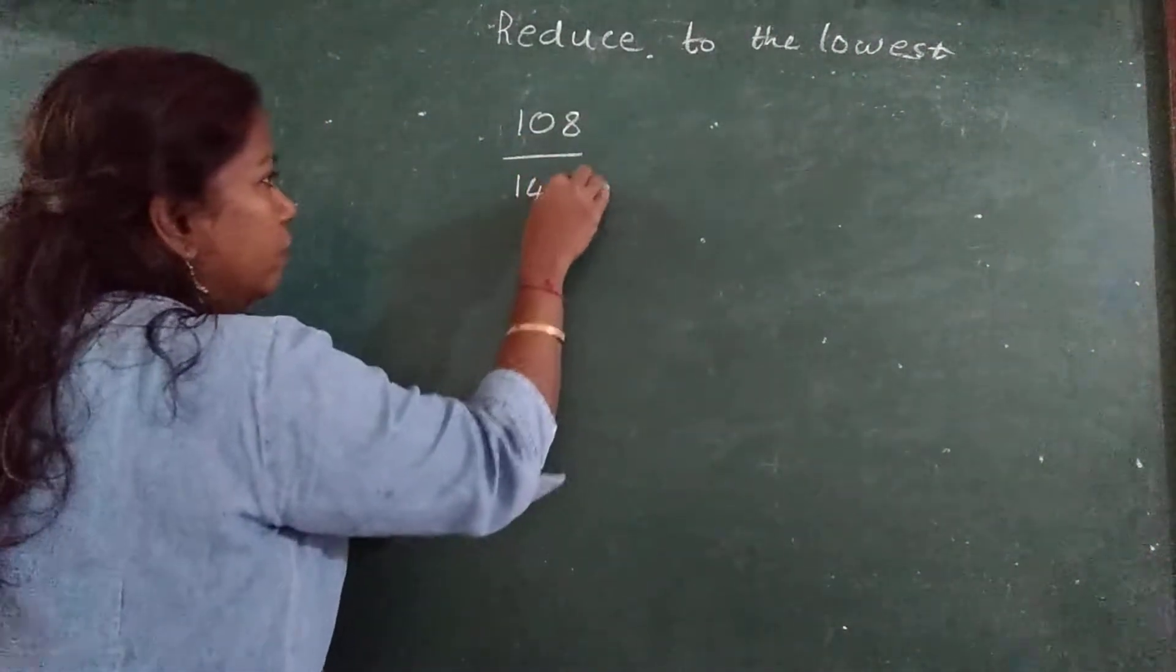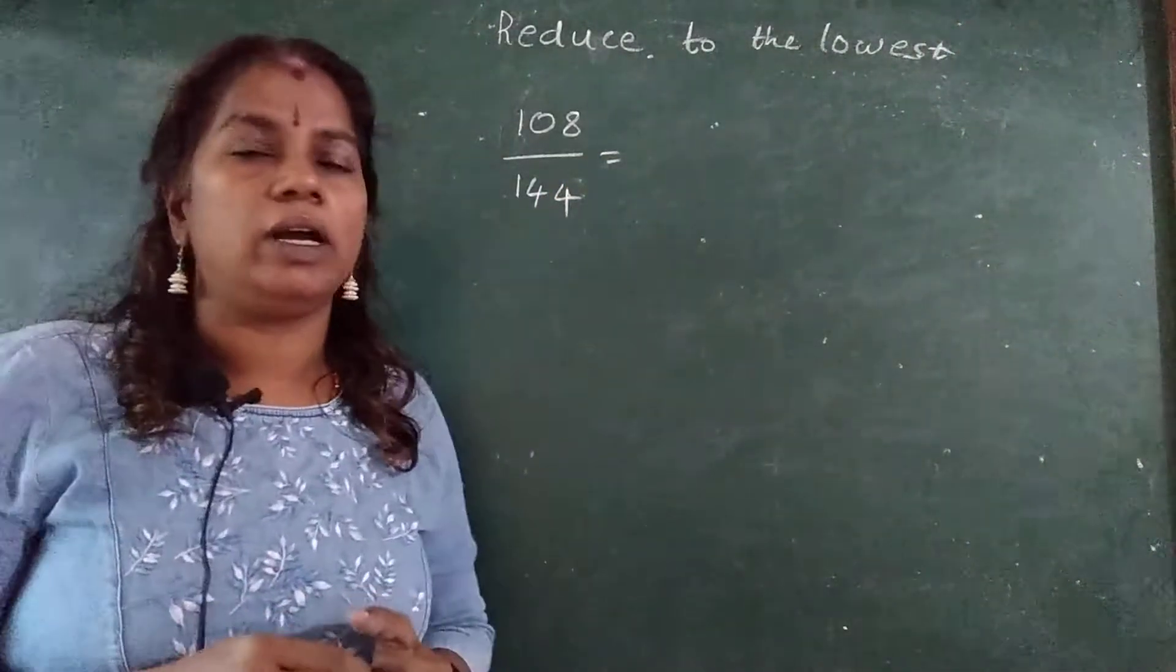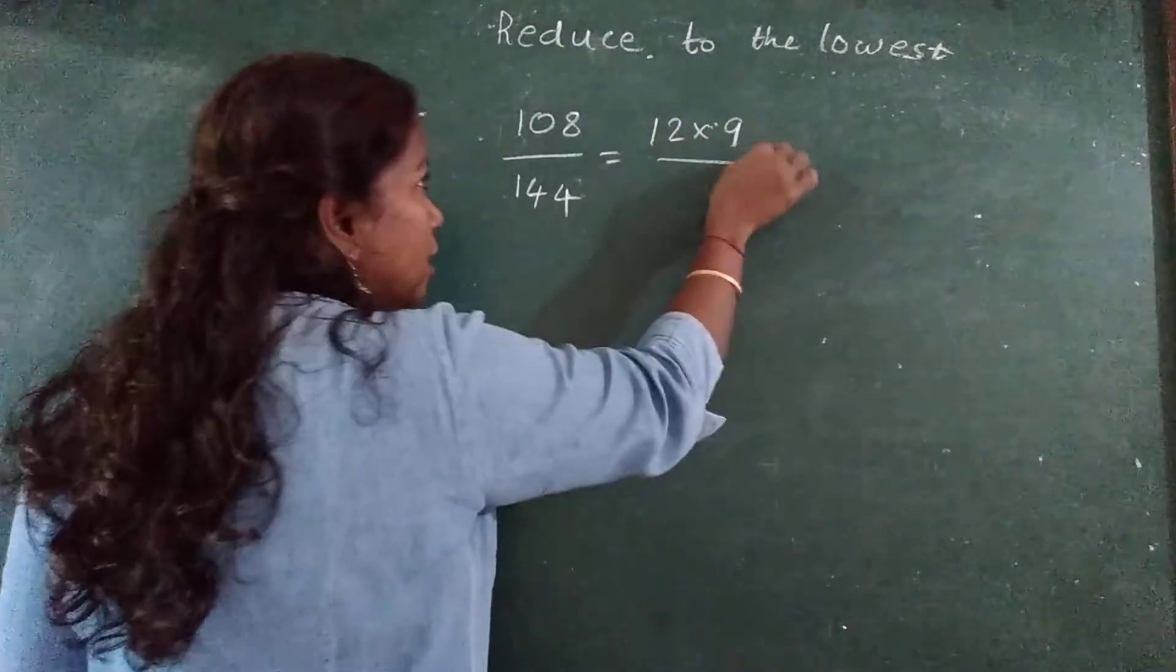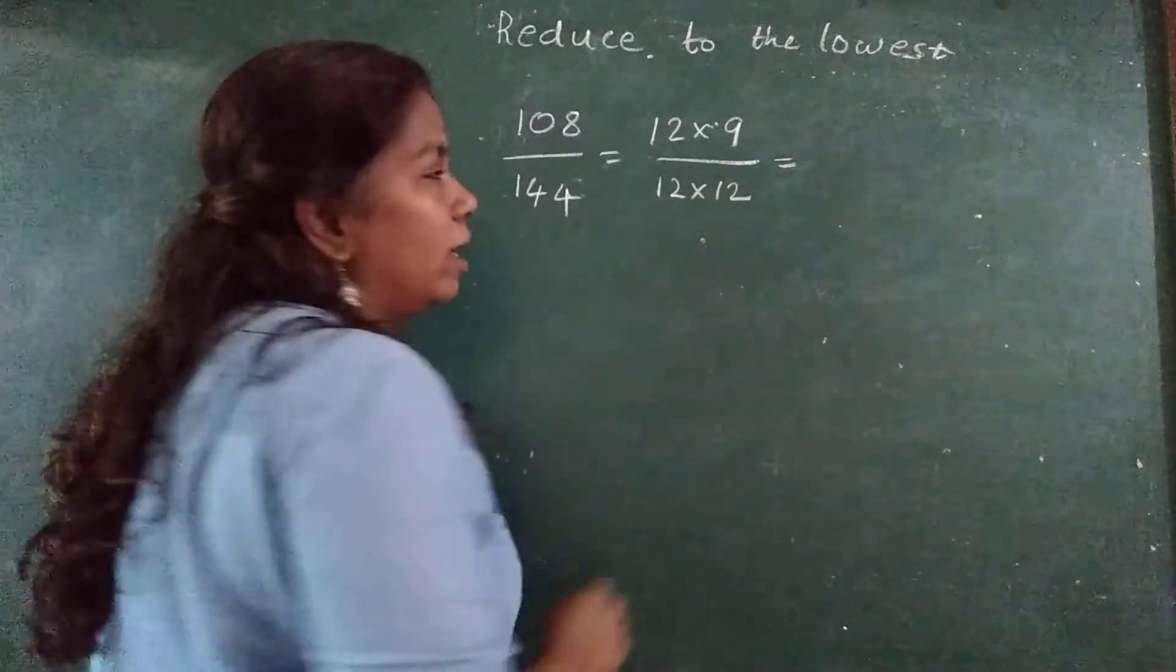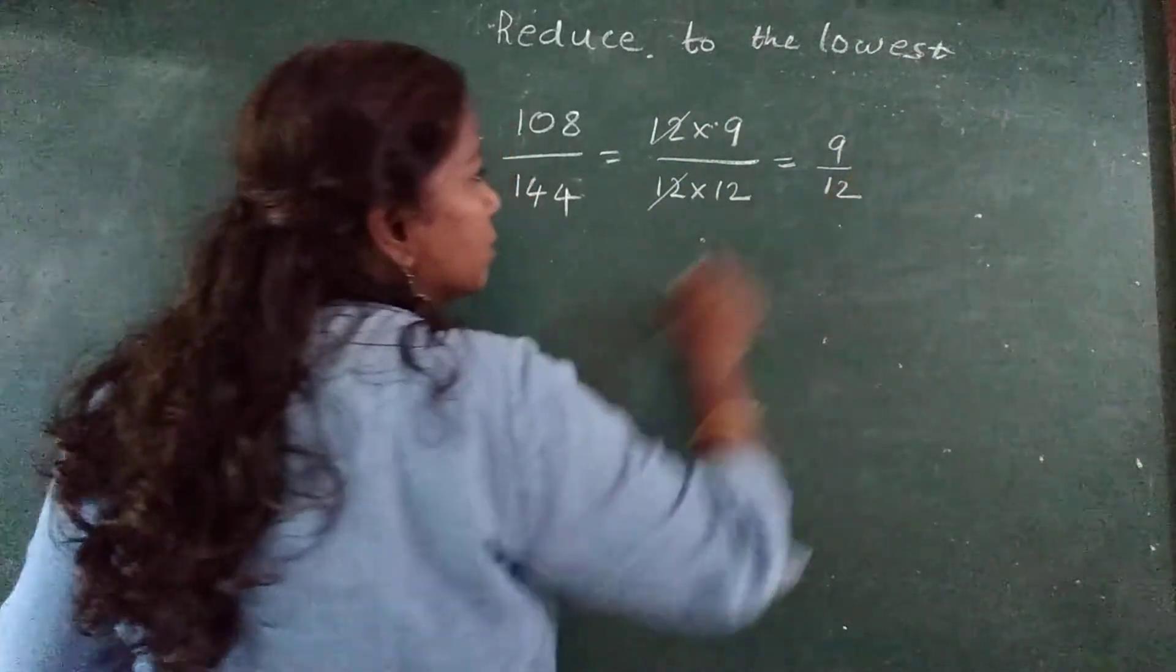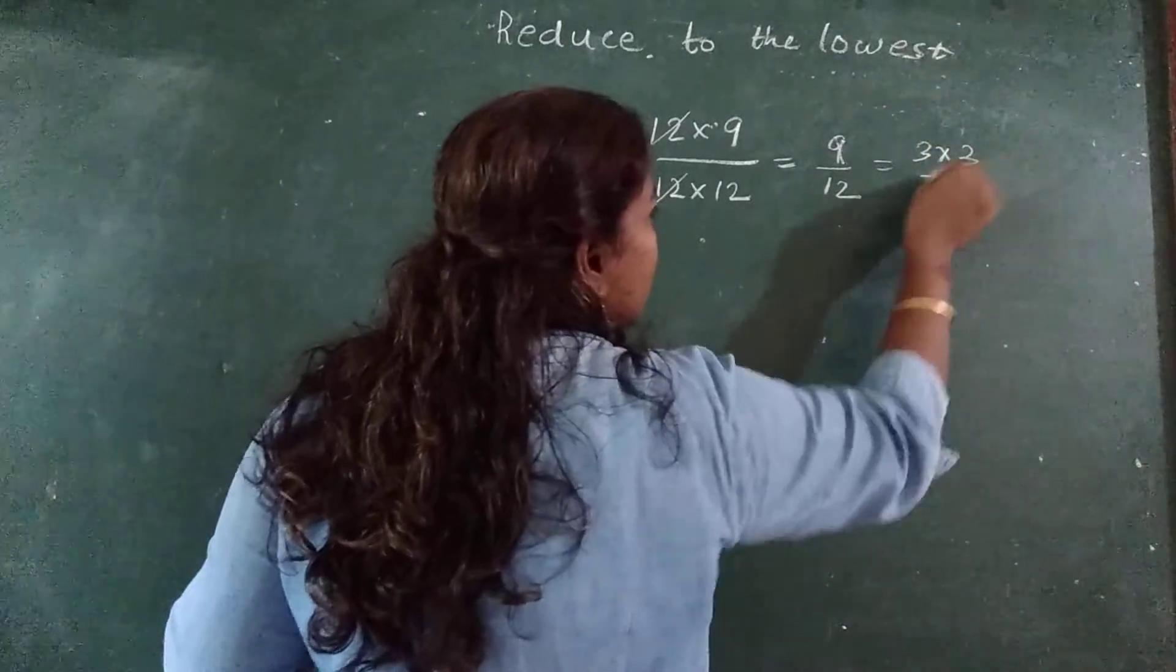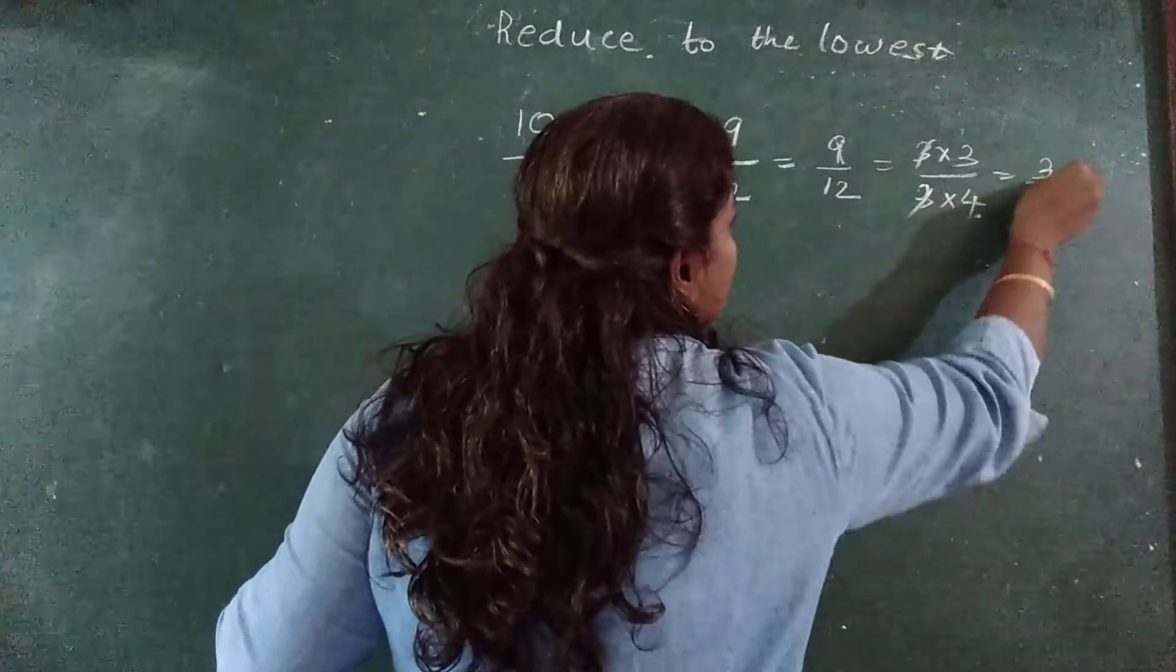I will show this sum in two methods. 108 upon 144. Suppose you have a 3 digit number, 108 and 144, how you reduce it? I know one method. 12 nines are 108. 12 twelves are 144. 12, 12 cancel. 9 upon 12. This again 9 can be written as 3, 3 threes. 3, 3 cancel. 3, 3 cancel. 3 upon 4.